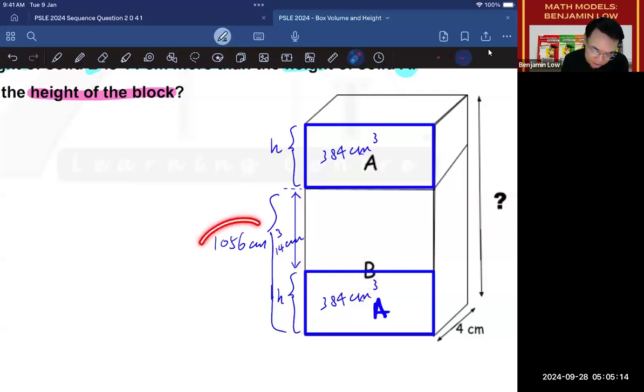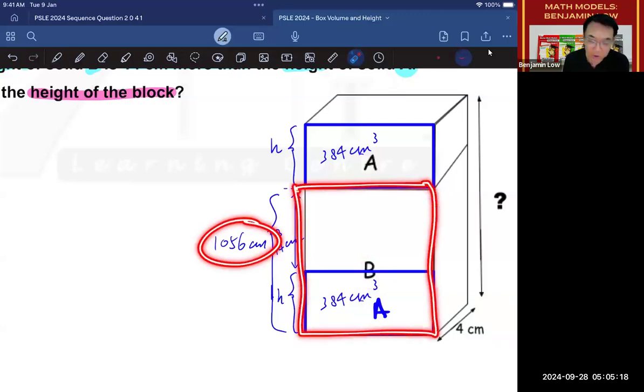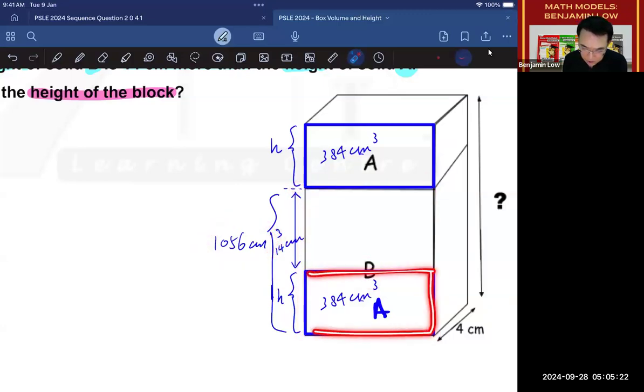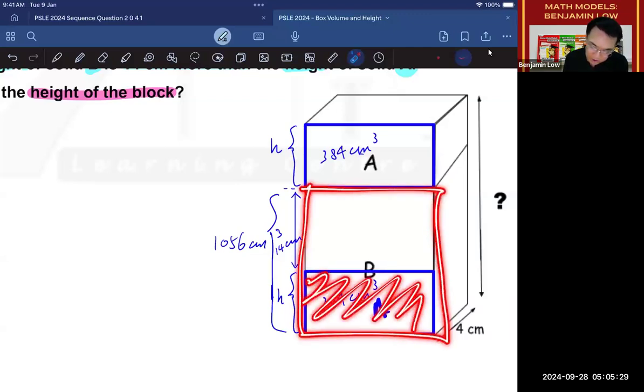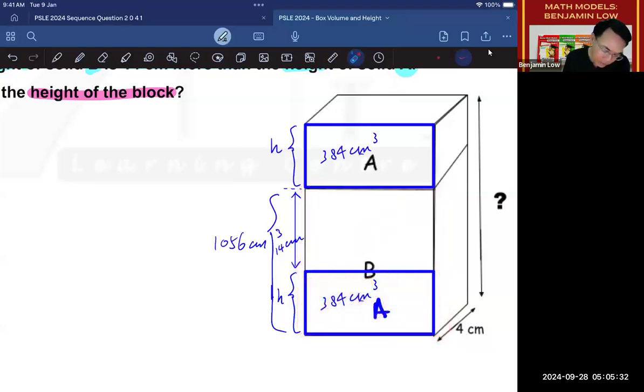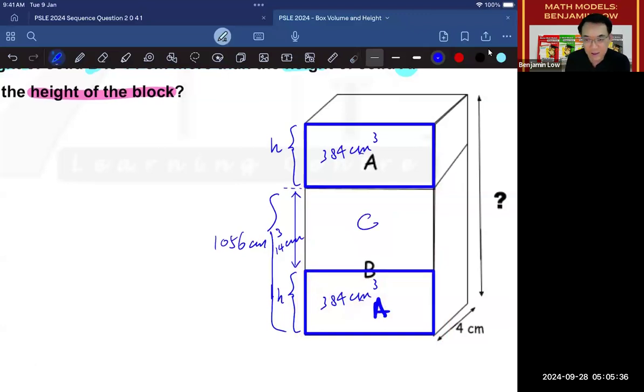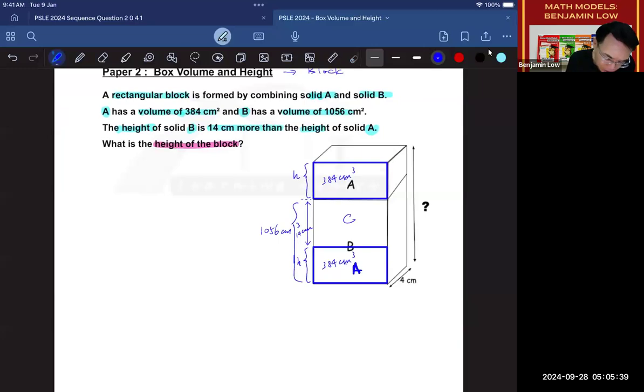Well, if you were to look at this now, we know that the volume of this portion is 1056. And we know that the volume of this portion is 384. So if you were to take 1056 minus 384, you will get the volume of this part. Let's call this part C for convenience. So what is the volume of C? So to find the volume of C, I will need to take 1056 and subtract 384.